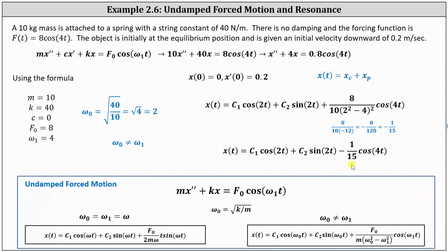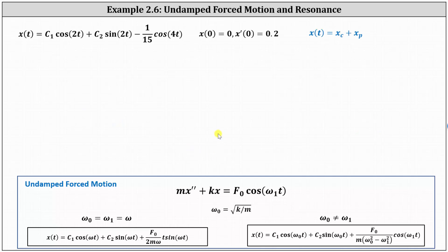We now use the initial conditions to determine C₁ and C₂. Using x(0) = 0, we substitute t = 0: C₁·cos(0) gives C₁; the C₂·sin(0) term drops out; and −(1/15)·cos(0) gives −1/15. Setting the result equal to zero gives C₁ − 1/15 = 0, so C₁ = 1/15. We substitute 1/15 for C₁.